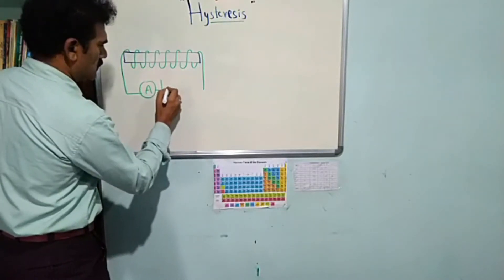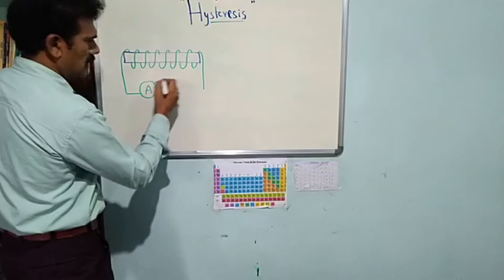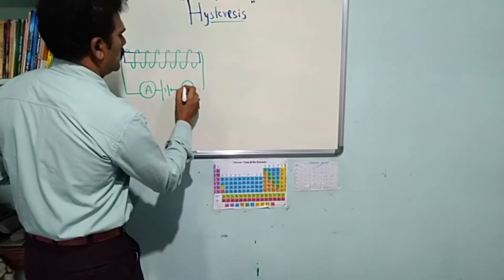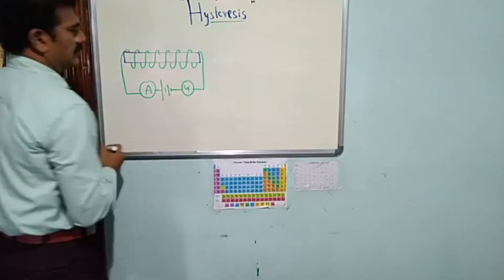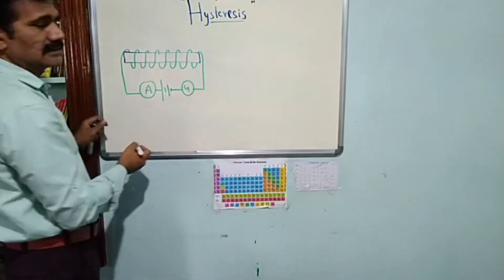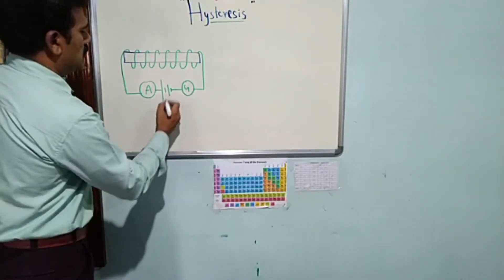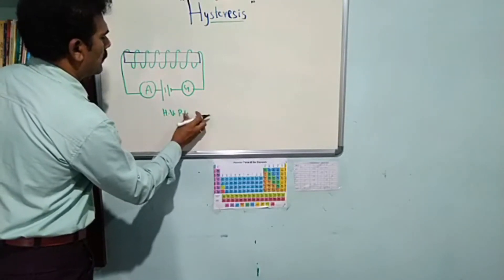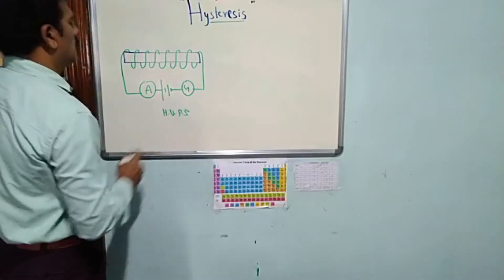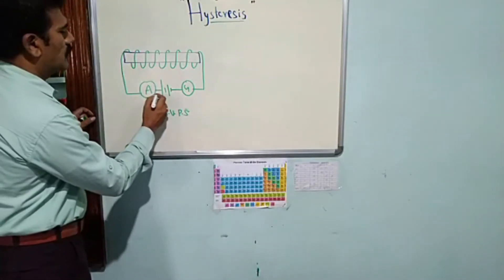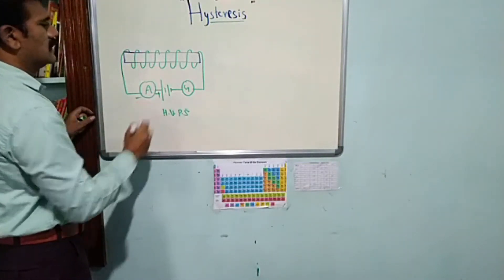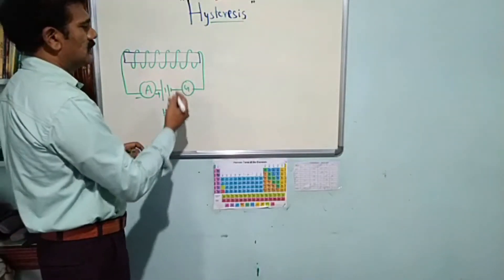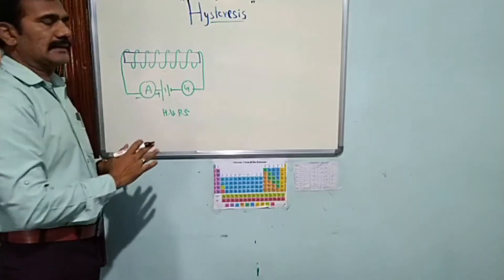It is not simply a battery; we use a high voltage power supply. There is a galvanometer in a simple series connection. The high voltage power supply has its positive and negative polarities connected appropriately, and the galvanometer shows the direction of current in the circuit.